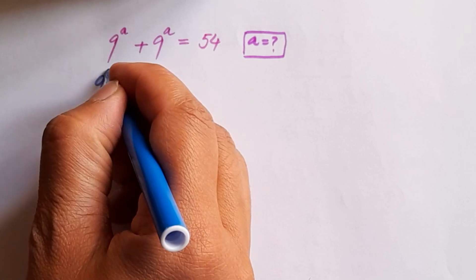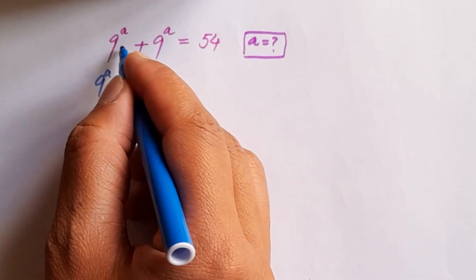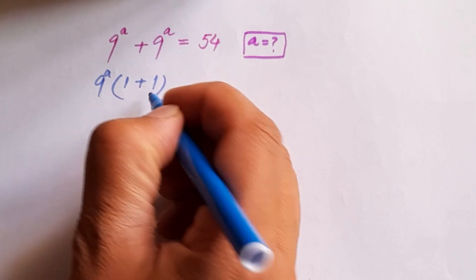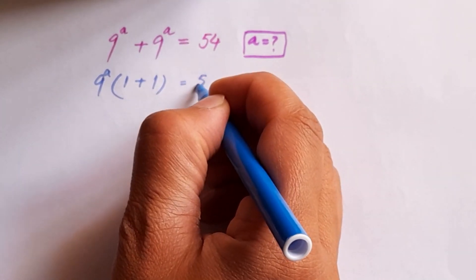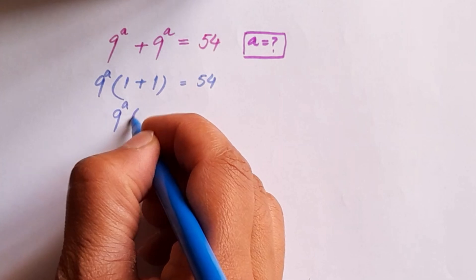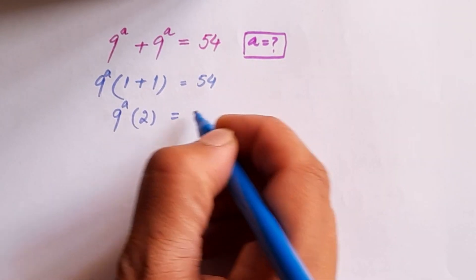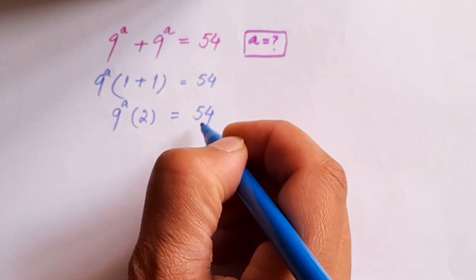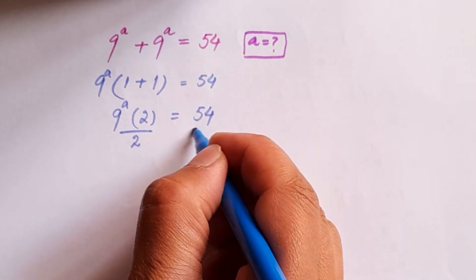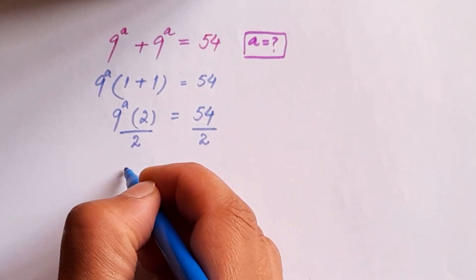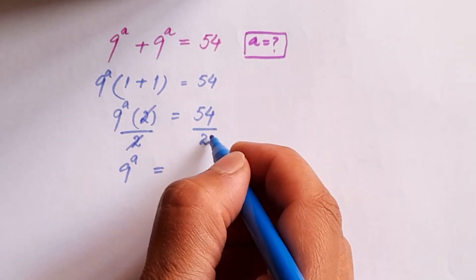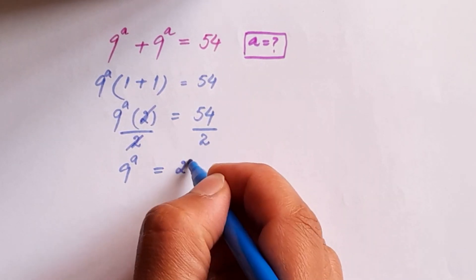We are going to take 9 to the power a as common. Dividing 9 to the power a by 9 to the power a gives 1, so we have 9 to the power a times (1 plus 1), which is 9 to the power a times 2. Dividing both sides by 2, we get 9 to the power a is equal to 27, since 54 divided by 2 is 27.